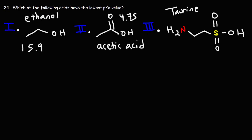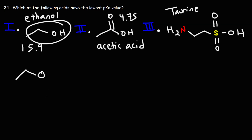Let's draw the conjugate base of ethanol. To draw the conjugate base, simply remove the hydrogen and decrease the charge by one. When we take away the hydrogen, the oxygen is neutral, and subtracting one gives a negative one charge. This is the conjugate base of ethanol — it's called ethoxide.